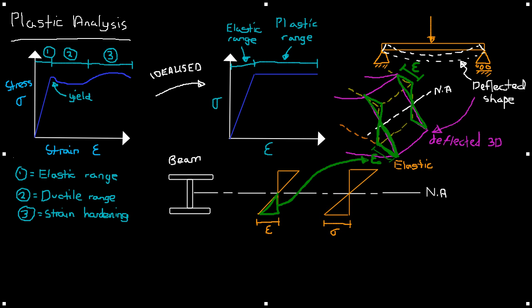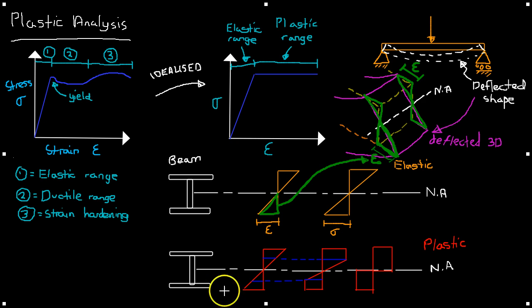If we move on to look at the plastic range, we will begin to see this behaving partially plastic here, and then it will move on to fully plastic, where there is no linear portion of the distribution diagram.